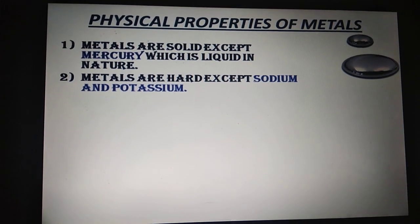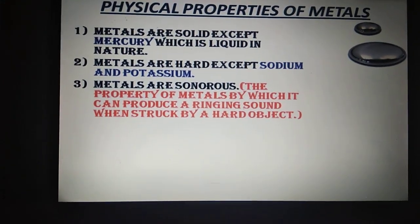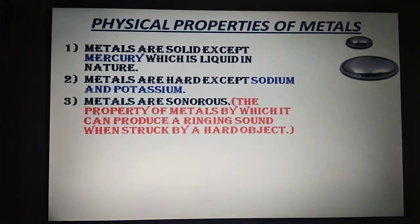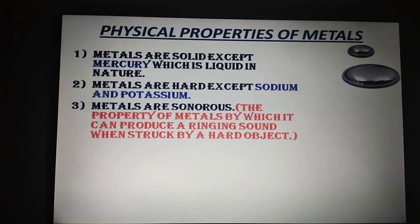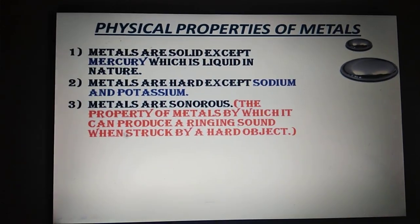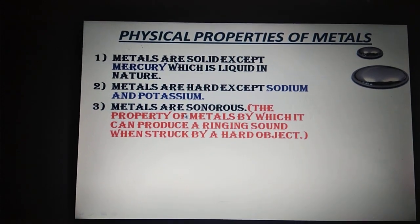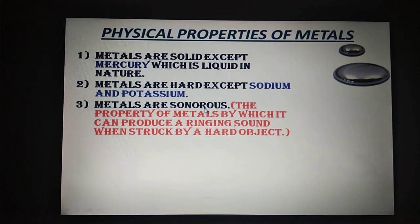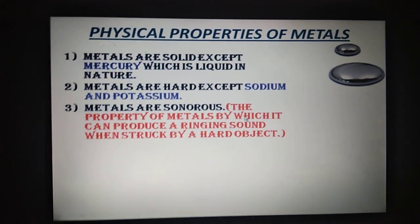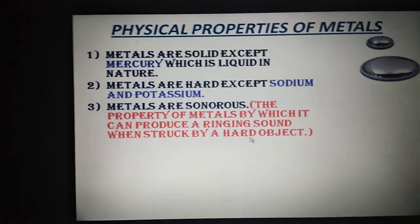The next point: metals are sonorous. Sonorous means the objects which give you sound. Alone it will not give any sound, but when you strike that particular metal with a hard object, it produces a ringing sound — that is known as sonorous. The property of metal by which it can produce a ringing sound when struck by a hard object. A common example is a bell.